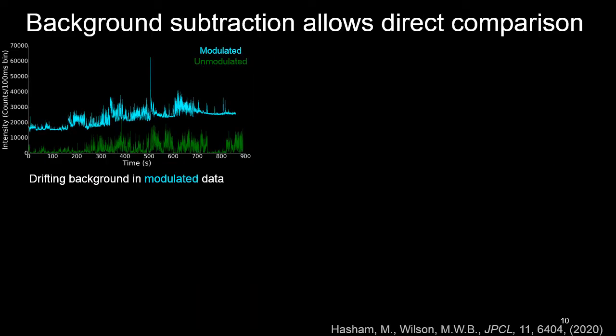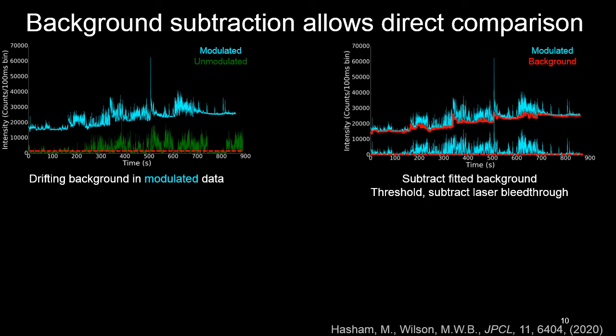Unfortunately, sometimes things aren't that simple. Here I show you an example of another experiment that we ran. However, this time the background during modulation was clearly drifting. So obviously it's incorrect for me to use a constant intensity threshold in this case. What we did is develop a background subtraction algorithm that could flatten out the background so we'd be able to compare the modulated and unmodulated data equivalently.